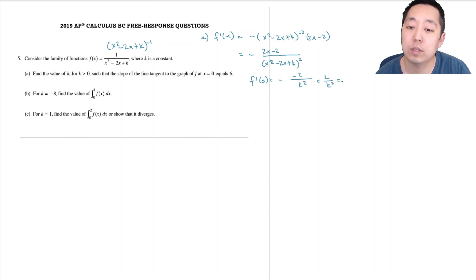I want to plug in zero, so this would be negative negative 2 over k squared, that's 2 over k squared equals 6. So k squared equals 1 third, and so k equals 1 over root 3, or root 3 over 3 if you like. They wanted k greater than zero so we picked the positive value.